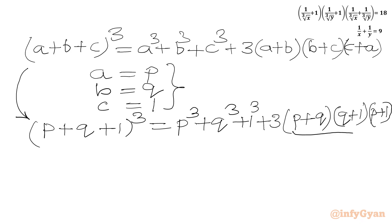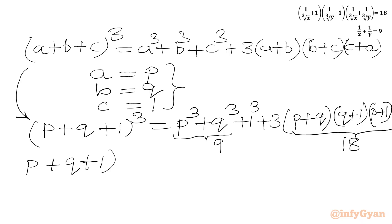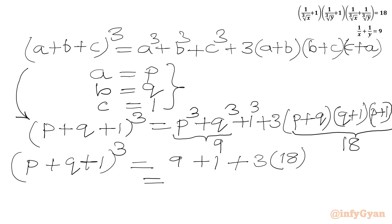So we get P plus Q plus 1 whole cube equal to P cube plus Q cube plus 1 cube plus 3 times (P plus Q)(Q plus 1)(1 plus P). From equation 2, P plus Q is 18. From equation 1, P cube plus Q cube is 9. So P plus Q plus 1 whole cube equals 9 plus 1 plus 3 times 18, which is 10 plus 54 equals 64.